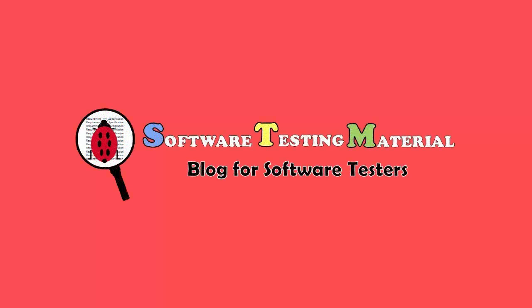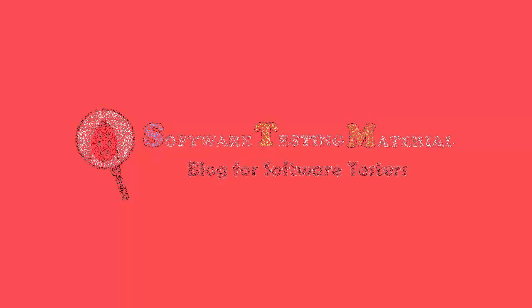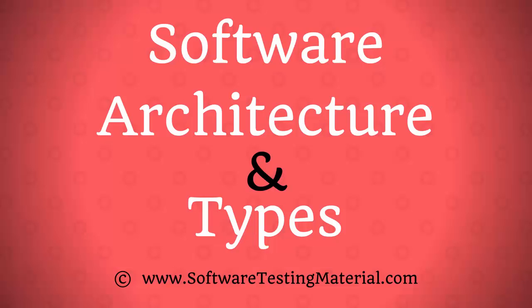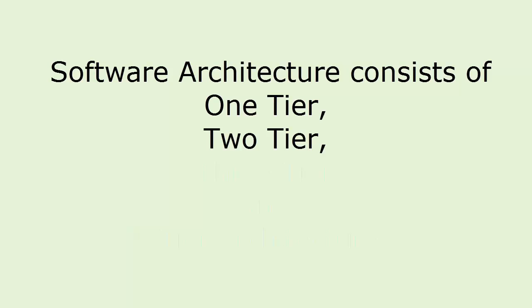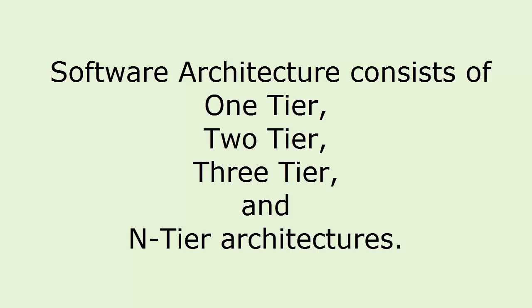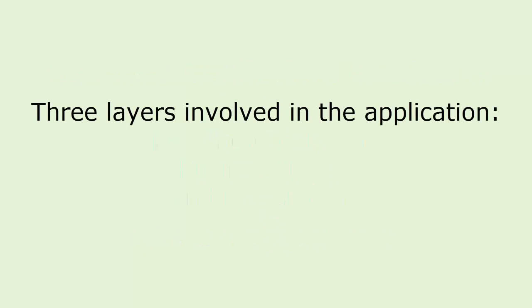Hi friends, this is Summa from softwaretestingmaterial.com. In this video we are going to see what is software architecture and types of software architecture. Software architecture consists of one tier, two tier, three tier, and n-tier architectures. A tier can also be referred to as a layer. Three layers are involved in the application, namely presentation layer, business layer, and data layer.